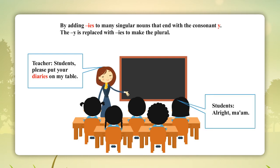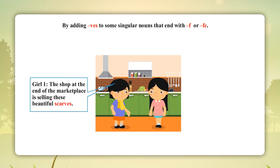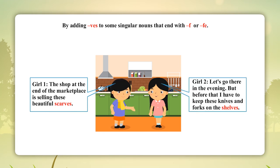By adding 'ves' to some singular nouns that end with 'f' or 'fe'. Girl 1: 'The shop at the end of the marketplace is selling these beautiful scarves.' Girl 2: 'Let's go there in the evening. But before that, I have to keep these knives and forks on the shelves.'